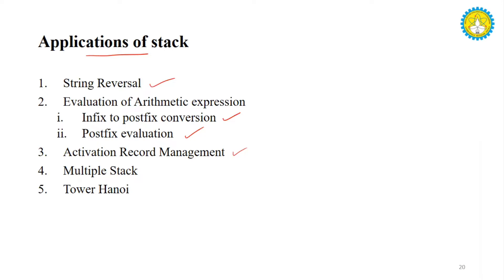In programs with main functions and sub-functions, we need to store the return address so that whenever we execute a particular function and return back, we can pop it out and continue execution. That is activation record management.